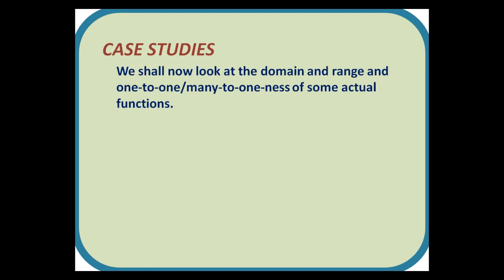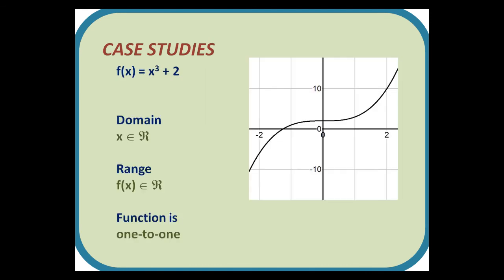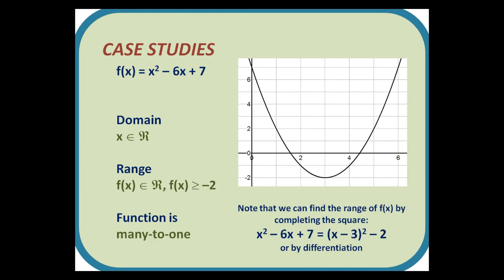We shall now look at the domain, range, and one-to-one or many-to-one nature of some actual functions. f(x) = x³ + 2 has a domain of x ∈ ℝ, a range of f(x) ∈ ℝ, and it is one-to-one. f(x) = x² − 6x + 7 has a domain of x ∈ ℝ, a range of f(x) ∈ ℝ with f(x) ≥ −2, and it is many-to-one. Note that we can find the range of f(x) by completing the square or by differentiation.